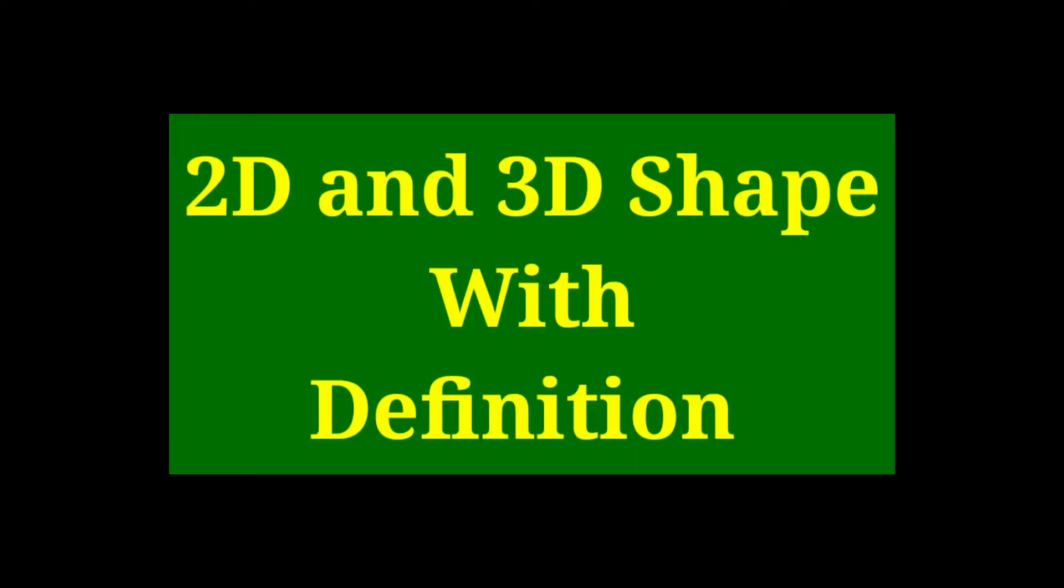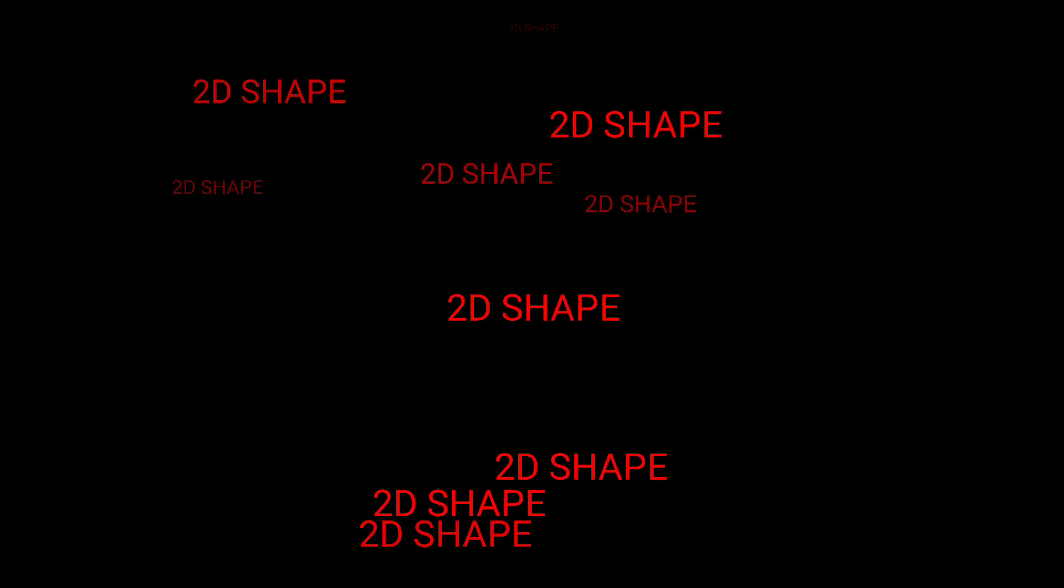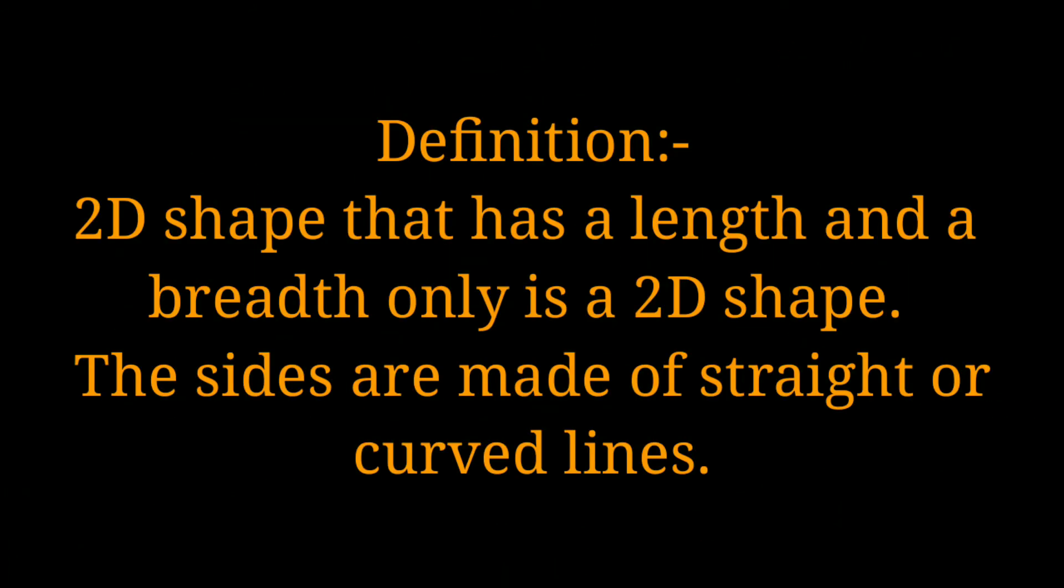Welcome to healthy conversation. 2D and 3D shapes with definitions. A 2D shape has a length and breadth only. The sides are made of straight or curved lines.